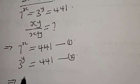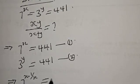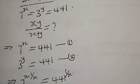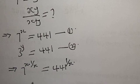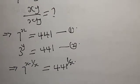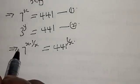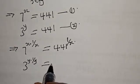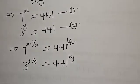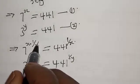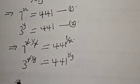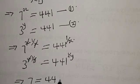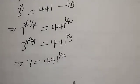This implies that we have 7 raised to power x times 1 over x to be equal to 441 raised to power 1 over x. We multiply both sides of the exponent by 1 over x, giving us 7 equals 441 raised to power 1 over x — equation 3. Also, 3 raised to power y times 1 over y equals 441 raised to power 1 over y, giving us 3 equals 441 raised to power 1 over y — equation 4.